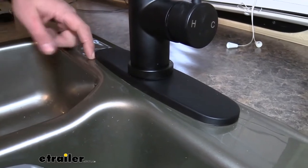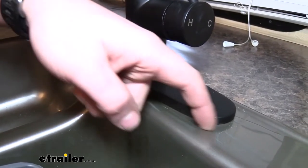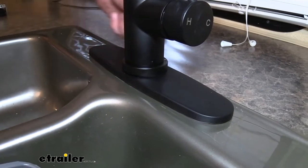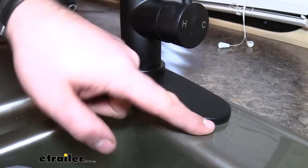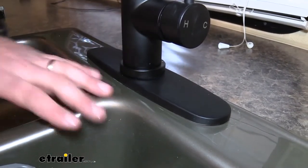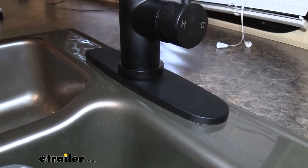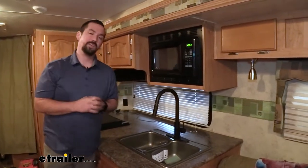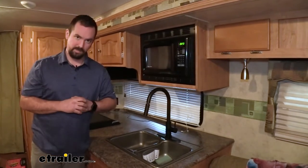I do recommend before tightening down you can put a little bit of plumber's caulk here and that's just going to make sure this stays waterproof. Now we're going to show you how to get this installed in your camper right now.